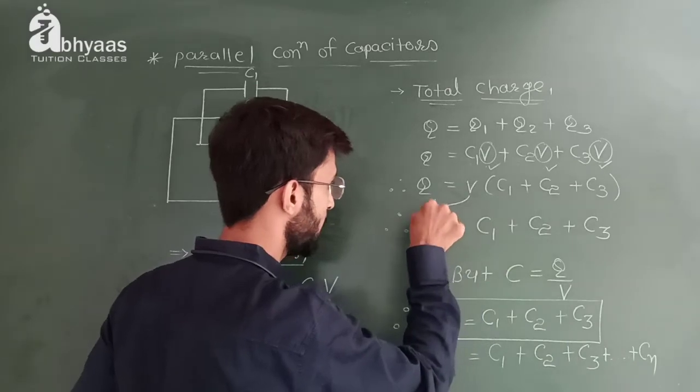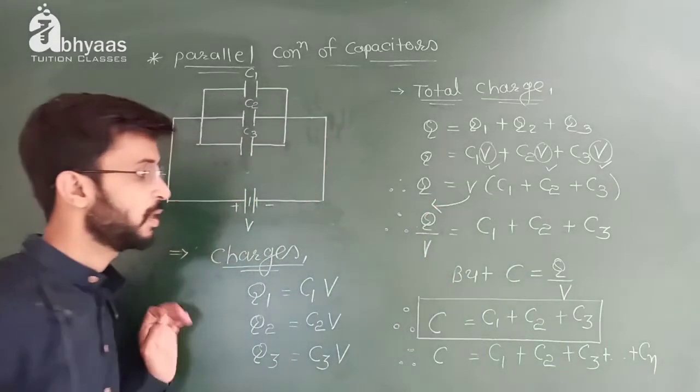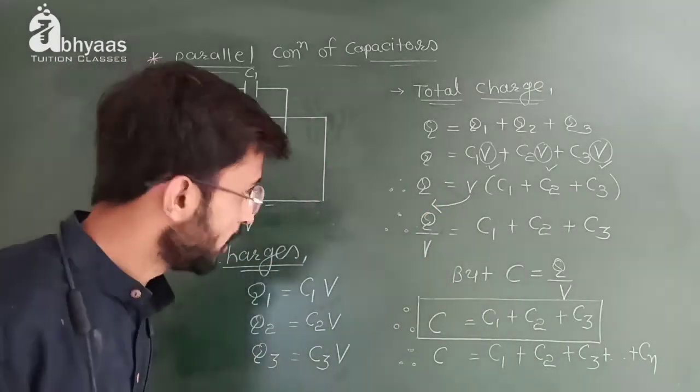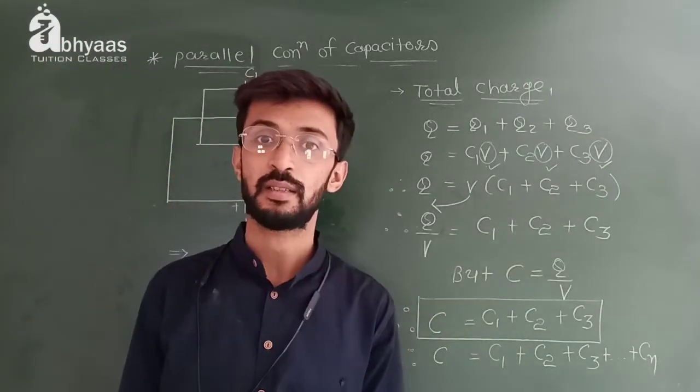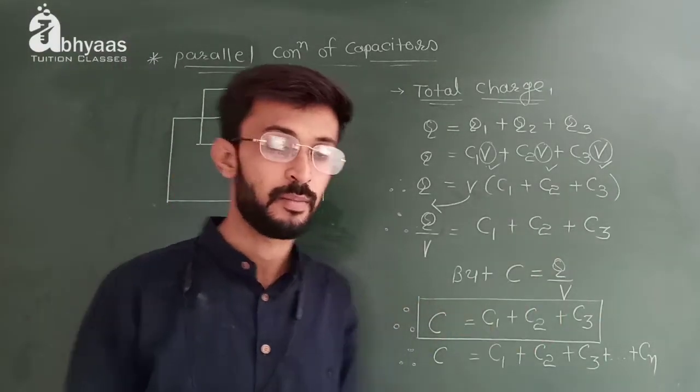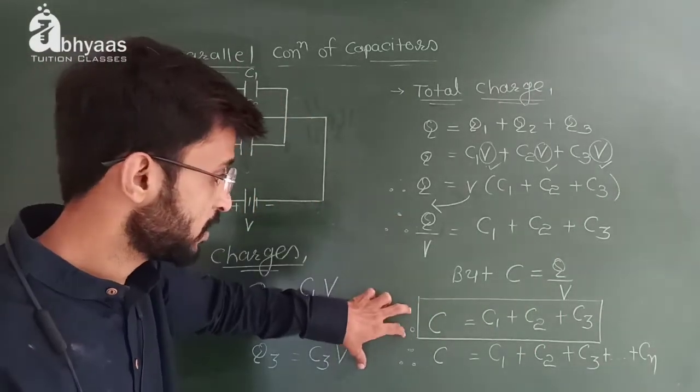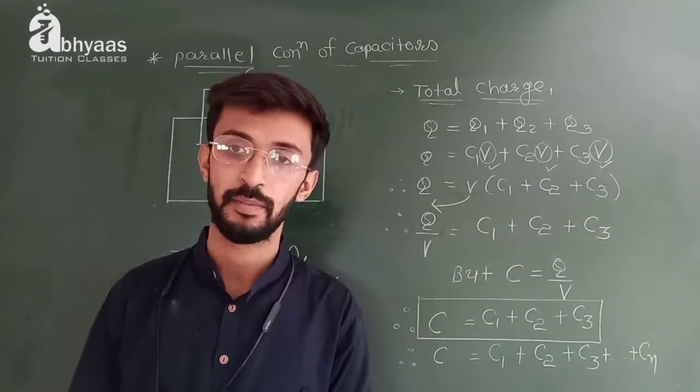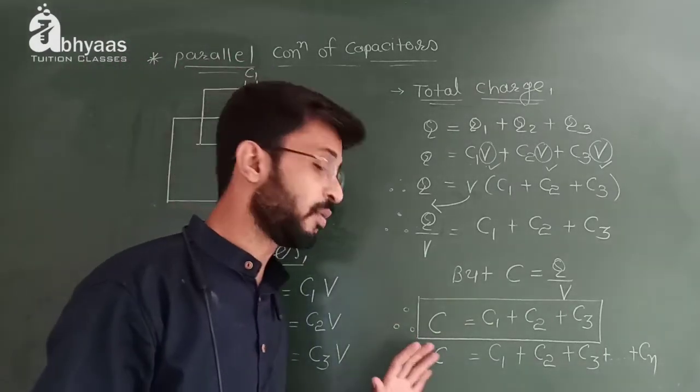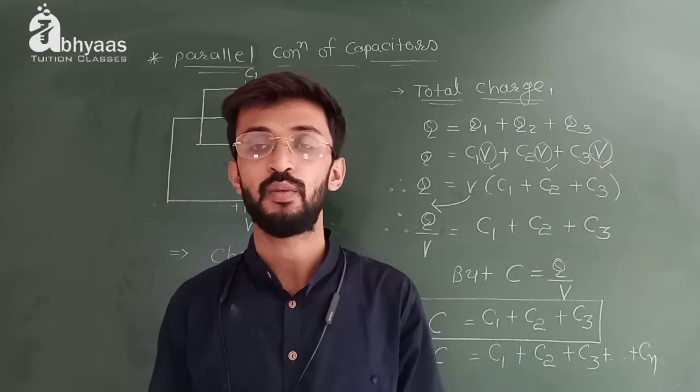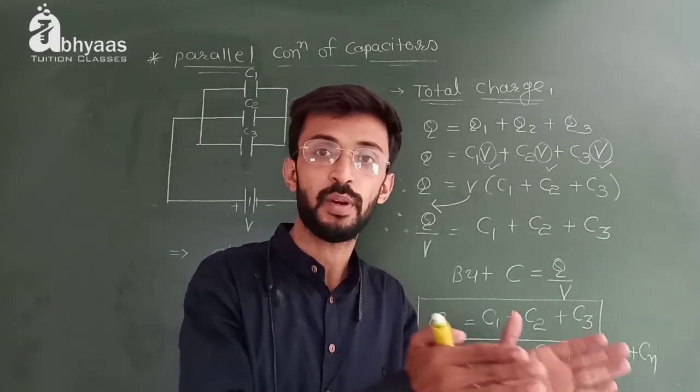When we divide by V, Q by V equals what? C. So the formula is C is equal to C1 plus C2 plus C3.